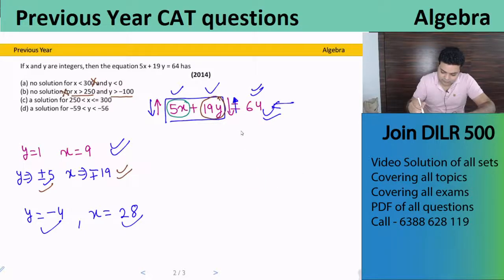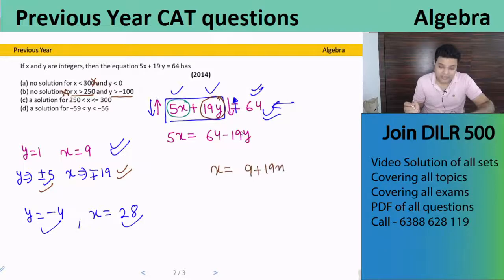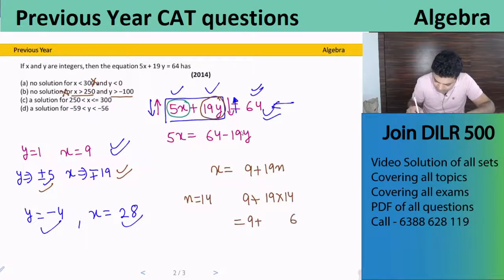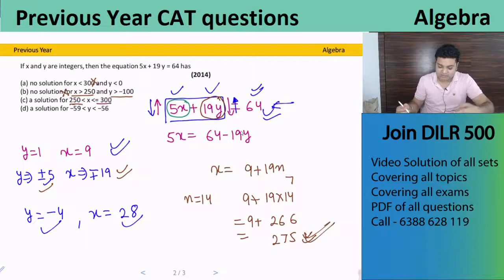Let's go to the third case. It says a solution for x greater than 250 and less than 300. We just calculated that at n equals 13, x was around 240 something. So let's try n equals 14. That gives 9 plus 19 into 14, which is 9 plus 266, equals 275. So this means we do get solutions where x is greater than 250 and less than 300. In fact, we'll get more than one solution. So this will be my answer, because it says the equation has a solution for x greater than 250 and less than or equal to 300.